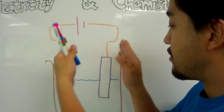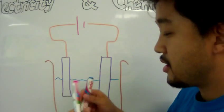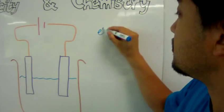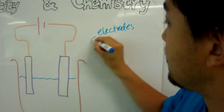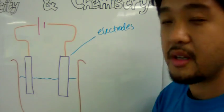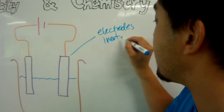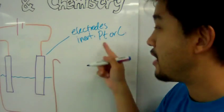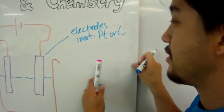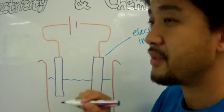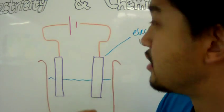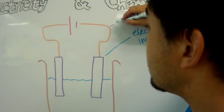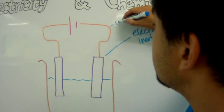You're going to put in two electrodes. Electrodes are inert, and they're basically made out of platinum or carbon. You have two electrodes here, and the electrodes are connected by a copper wire, usually a copper wire, because copper wire makes really good electrical conductors.